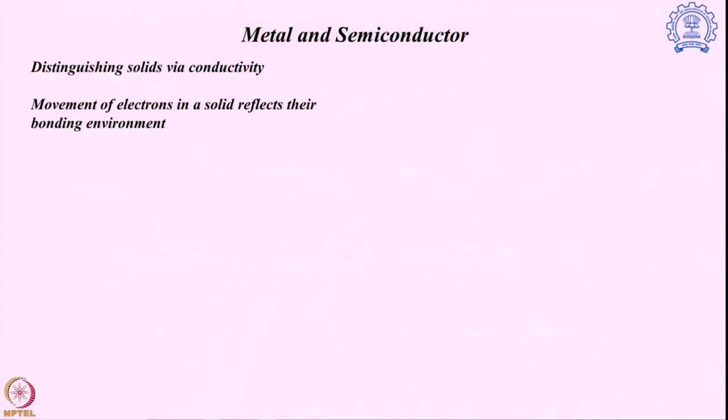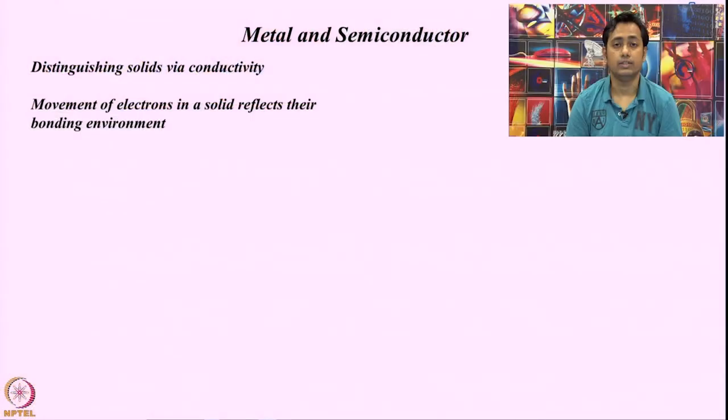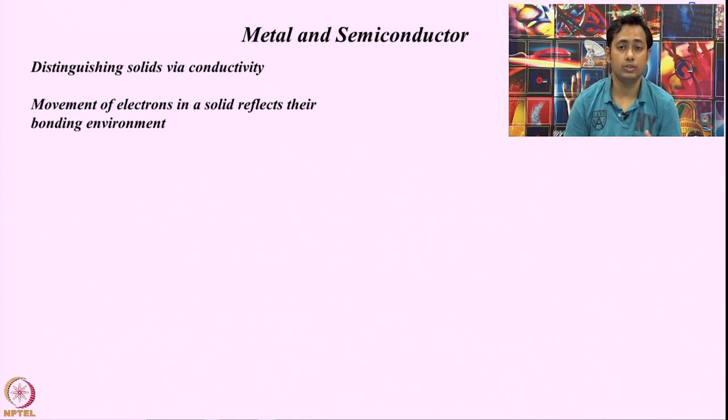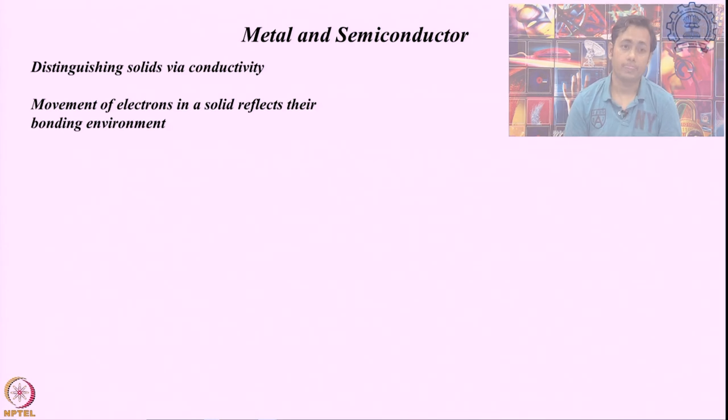Now we know how electrons behave in a solid state, but can we understand it properly so that we can understand how the electrons' movement can control the behavior of a solid material? For that we are going to discuss two different systems: metal and semiconductor, which we can distinguish by electrical conductivity. Electrical conductivity is the movement of the electron through the solid. It shows how electrons are moving through the system — it is a reflection of electrons' movement through the surface of the solid, and also provides information about the bonding environment inside the material.